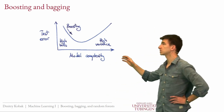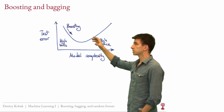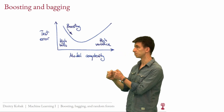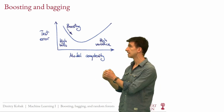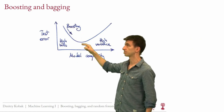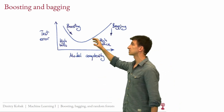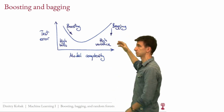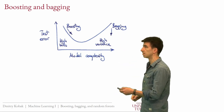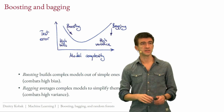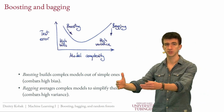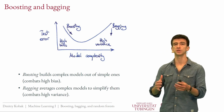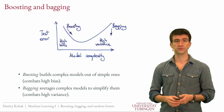Boosting and bagging can be illustrated on this plot as follows. Boosting usually starts with a very simple model — one that underfits the data and has high bias — and then we apply the boosting procedure, increasing the model complexity and bringing the error down. Bagging, in contrast, starts with a very complex model that overfits the data badly, and then we bag several models together to reduce the variance and improve performance. So boosting builds complex models out of simple ones, while bagging averages complex models hoping to average out the variance.